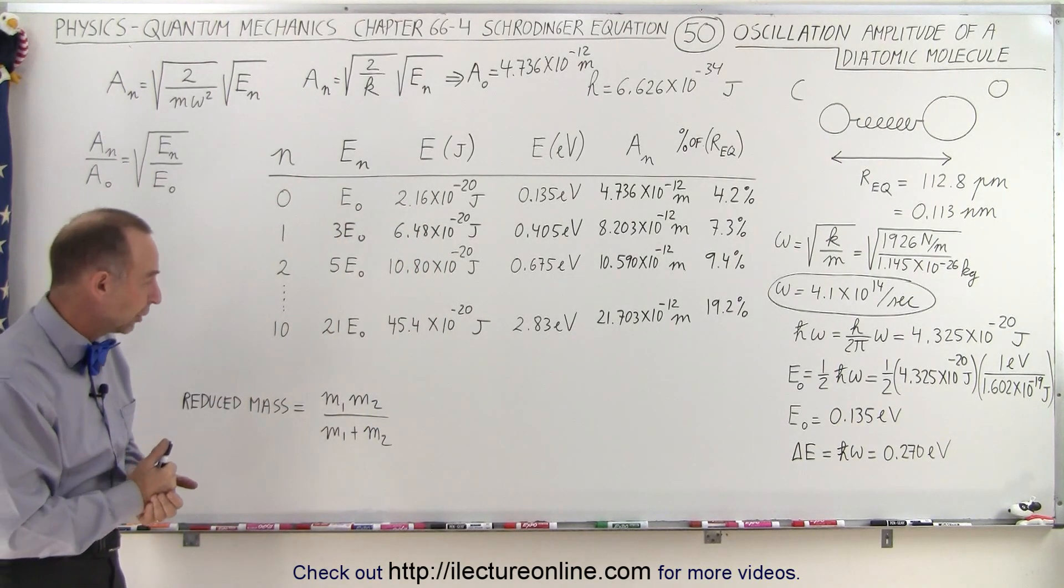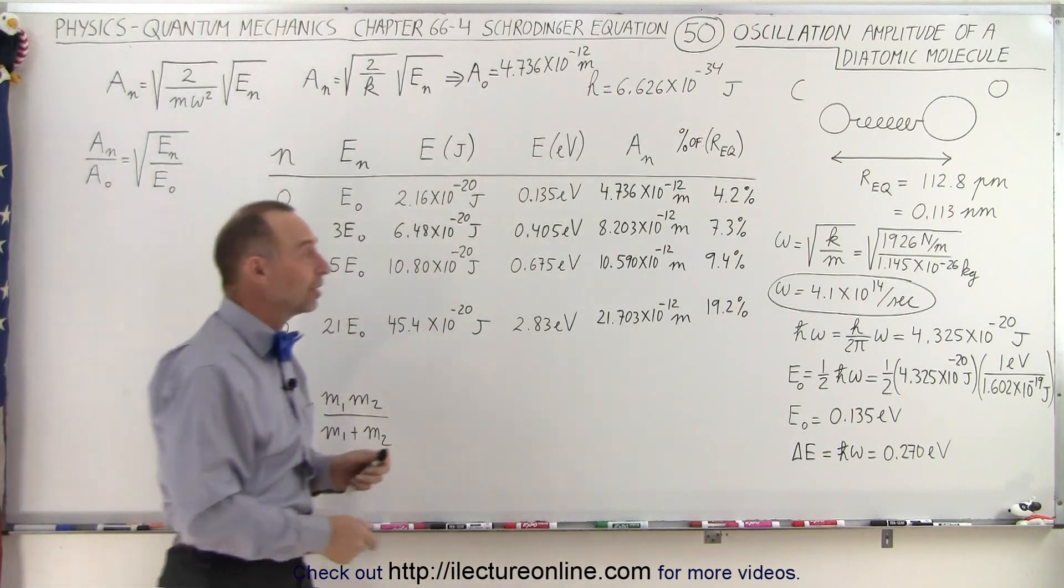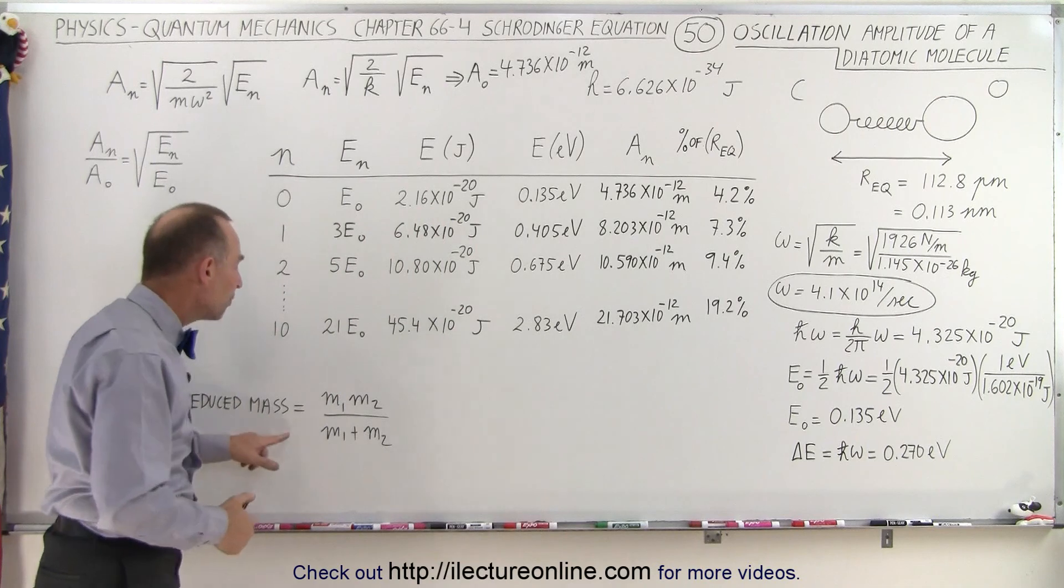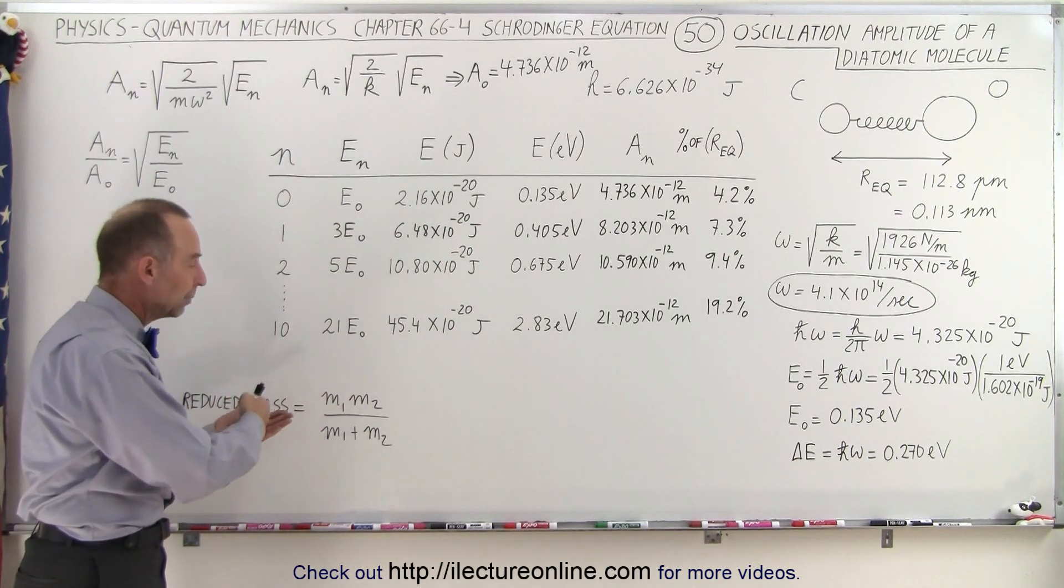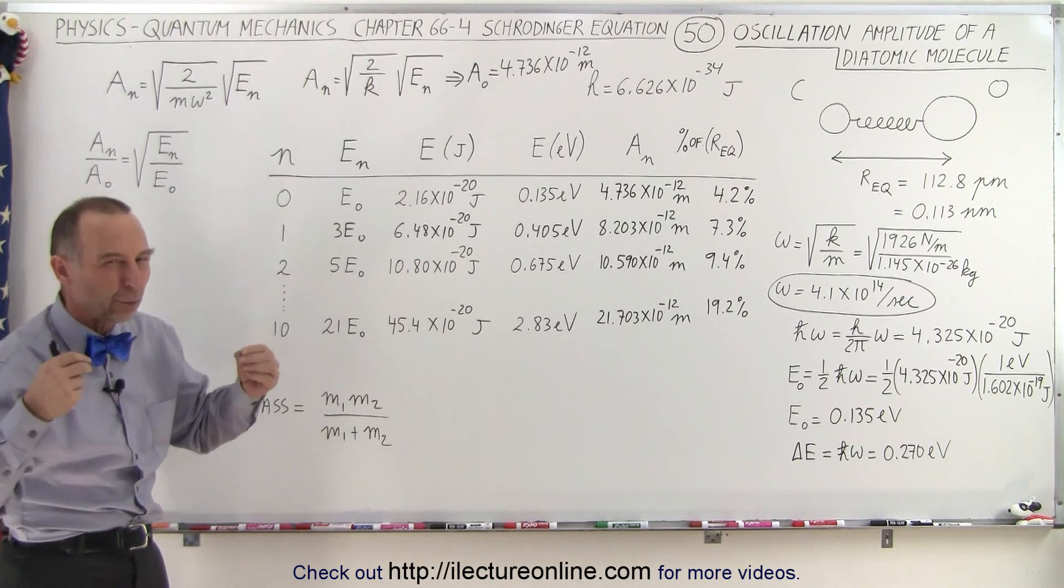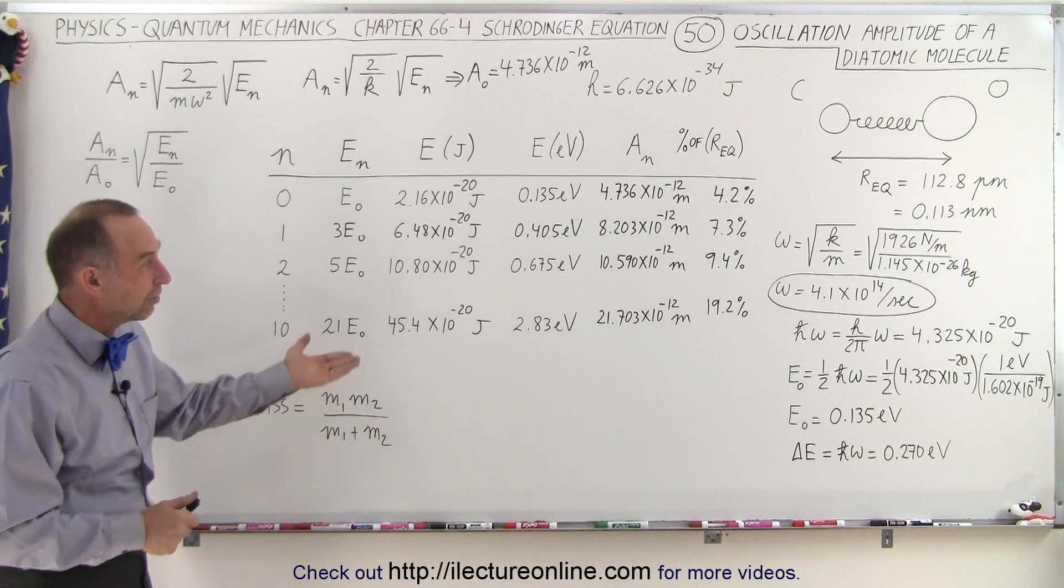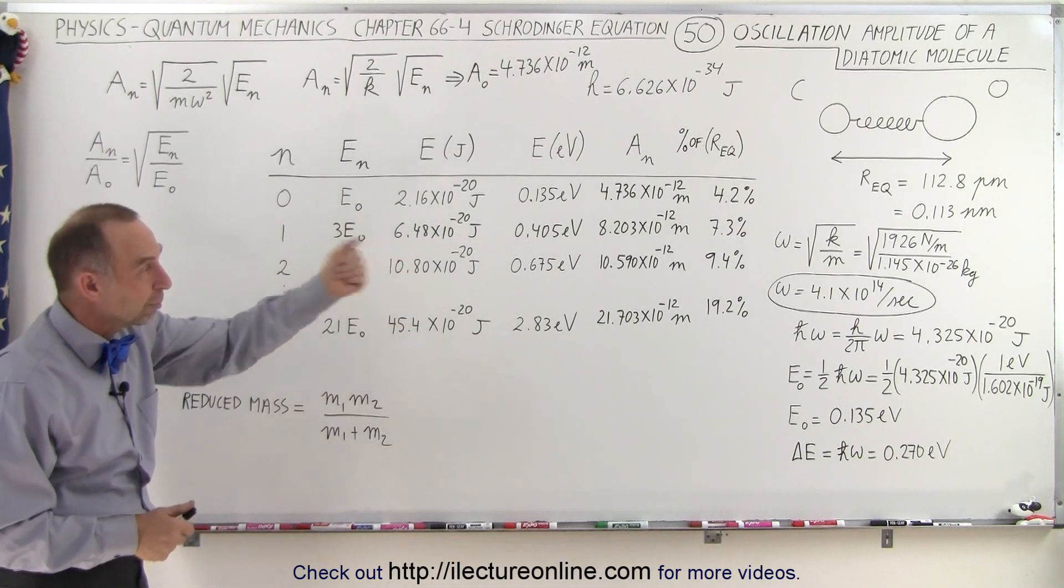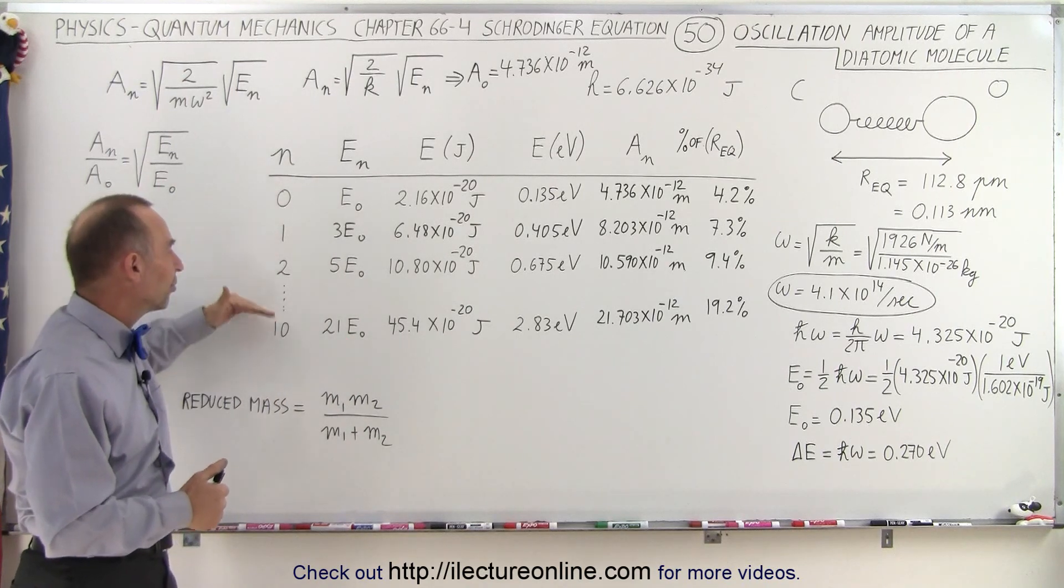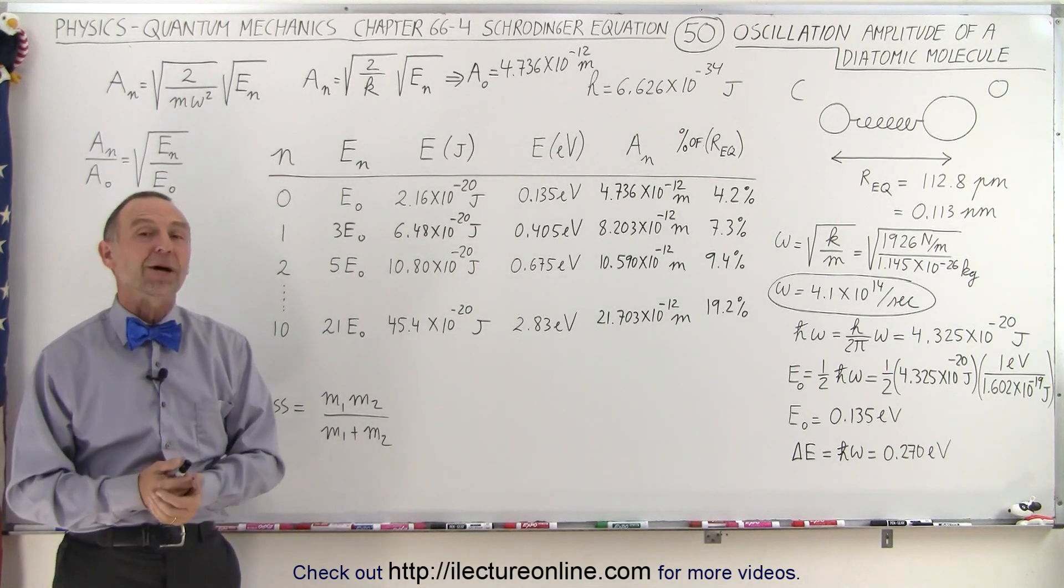Keeping in mind, of course, that the mass that we use here is what we call the reduced mass, which is the product of the mass of the carbon atom and the oxygen atom divided by the sum of the two atoms. That gives you the equivalent reduced mass that we use in that particular oscillator. And so that's how we determine a realistic picture of what the amplitude of the oscillations are at various quantum states of the quantum mechanical oscillator, in this case the carbon monoxide molecule.